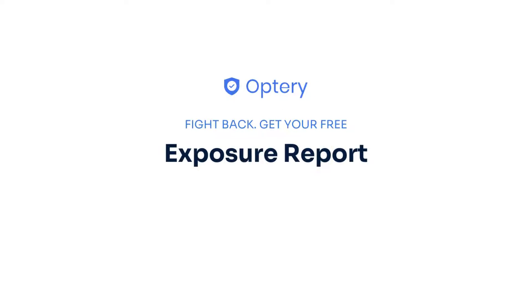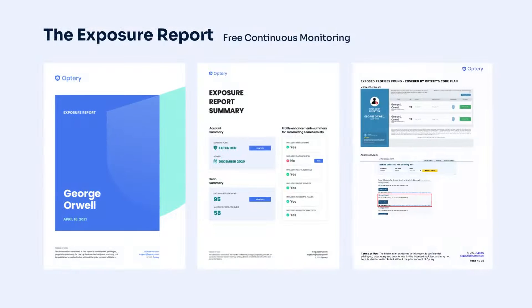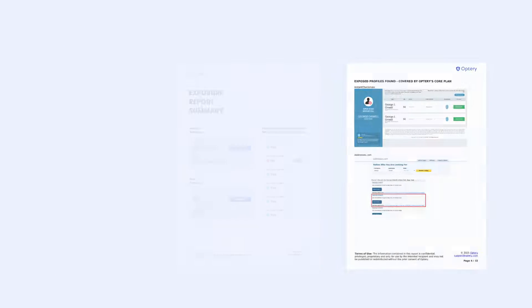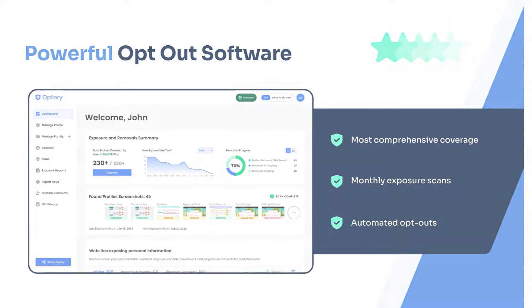That is why Optory offers the free exposure report. The exposure report shows screenshots from sites that have your data, with links to let you see that data right on the site. Use the exposure report and our how-to guides to opt yourself out for free, or sign up for an Optory paid plan, and Optory will handle the monitoring and removals for you and your family members.